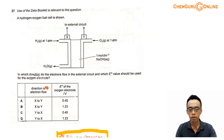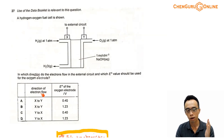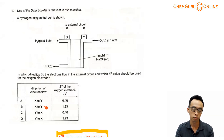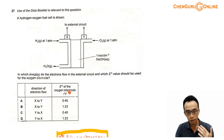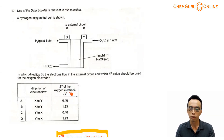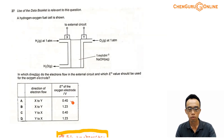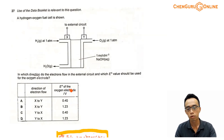If I consider the options A, B, C, D, the direction of electron flow is either from electrode X to Y or vice versa. Then the E-value of the oxygen electrode is between 0.40V and 1.23V.